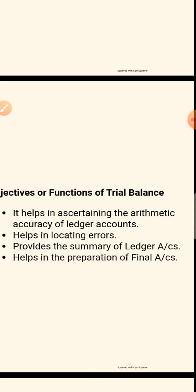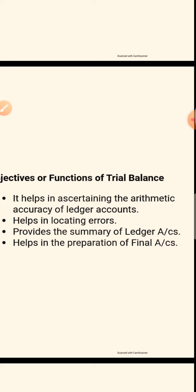On one page you have the cash balance, bank balance, capital balance, machine balance — it means the summary of all balances will come on the trial balance. The next objective is that it helps in preparation of the final account.